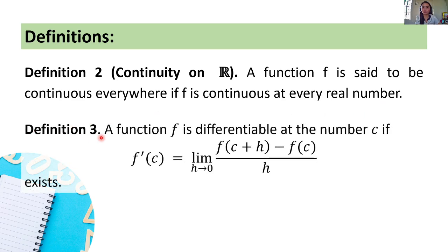And then we have Definition 3. A function f is differentiable at the number c if f prime of c — equal to the limit of f of c plus h minus f of c all over h as h approaches 0 — exists. In simple terms, we can say that the function f is differentiable at the number c if f prime of c, or the derivative of the function at the number c, exists.